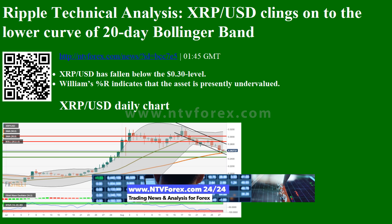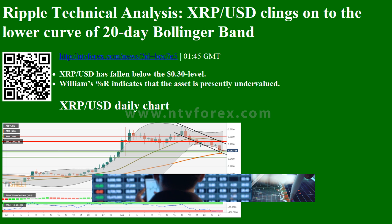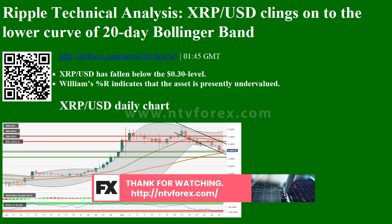XRPUSD bears have stayed in control of the market for the second straight day. The price is presently trending in a downward channel formation and hugging along the lower curve of the 20-day Bollinger Band. XRPUSD has currently fallen from $0.2663 to $0.3014 in the early hours of Friday. The Elliott Oscillator has had 11 straight red sessions, dropping from 0.046 to 0.008. Williams %R is still hovering inside the oversold zone, which indicates that the asset is presently undervalued.